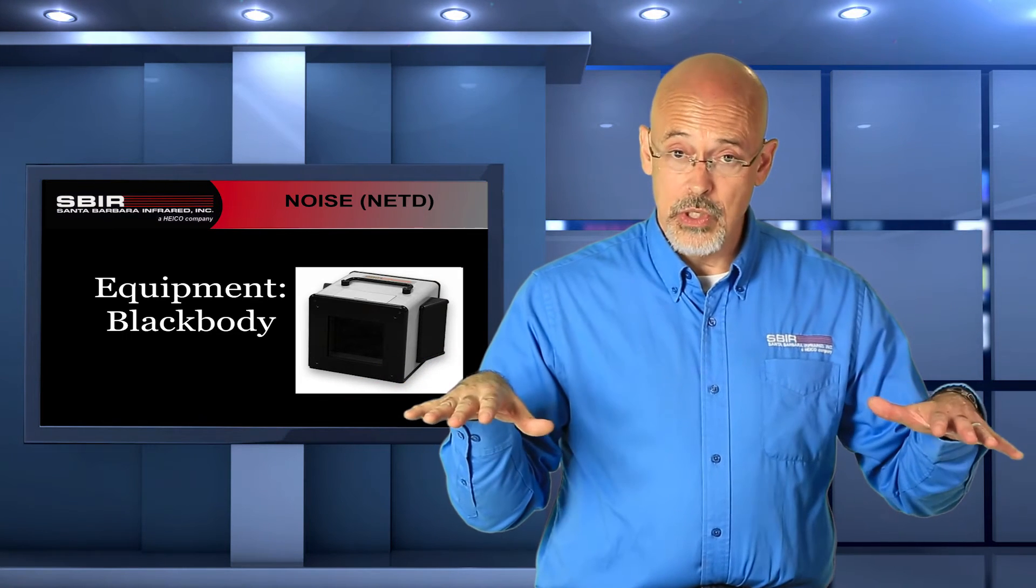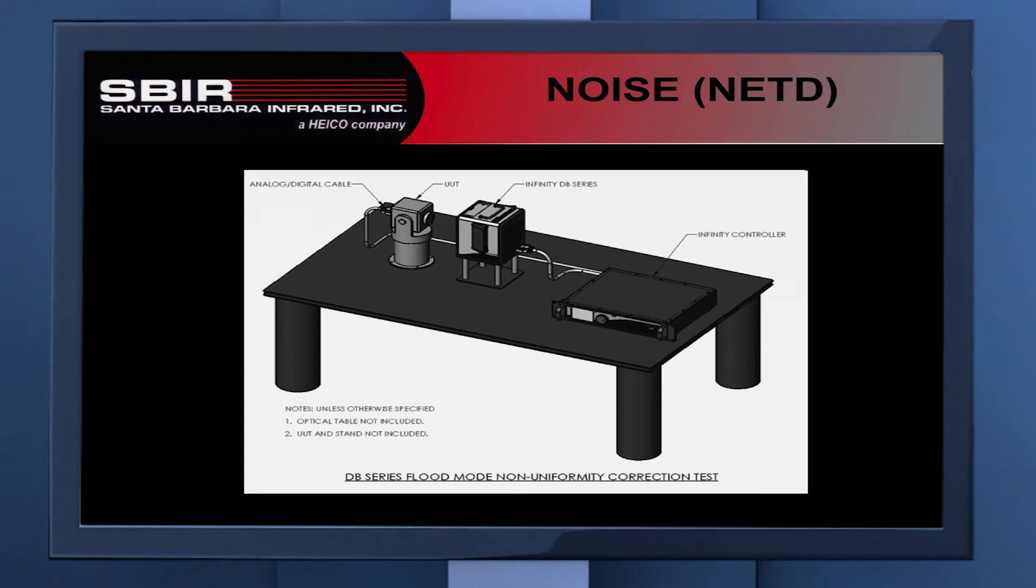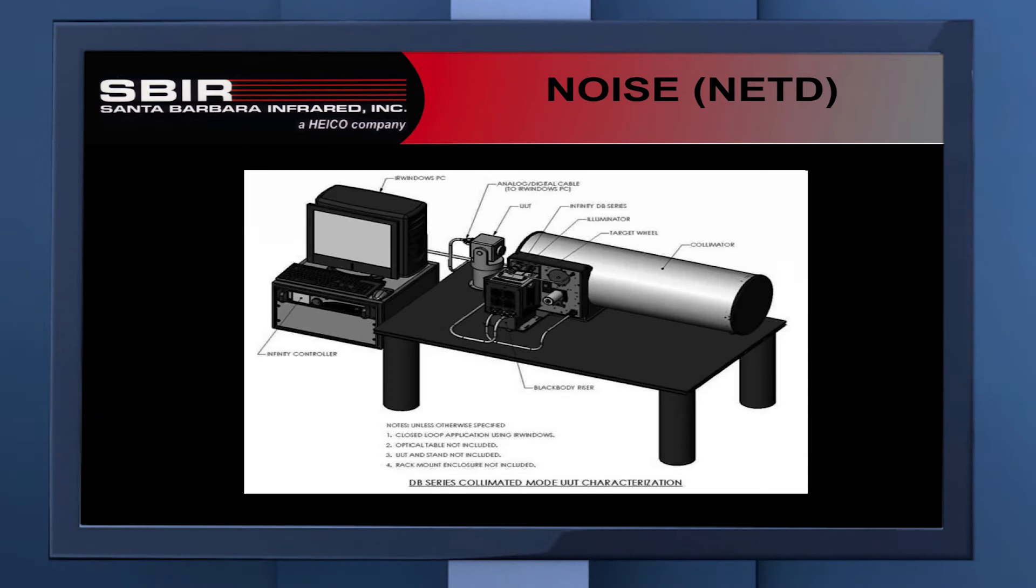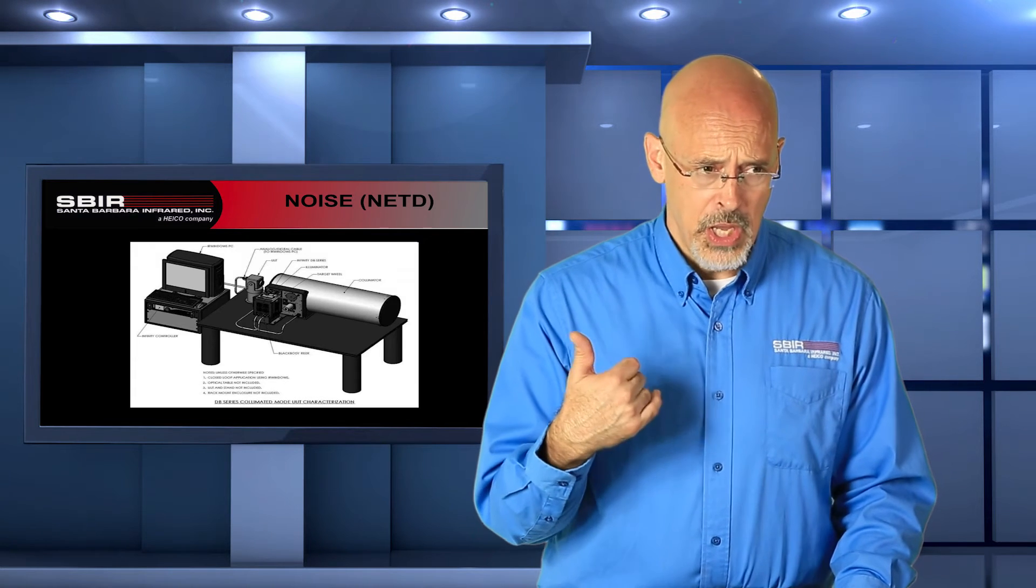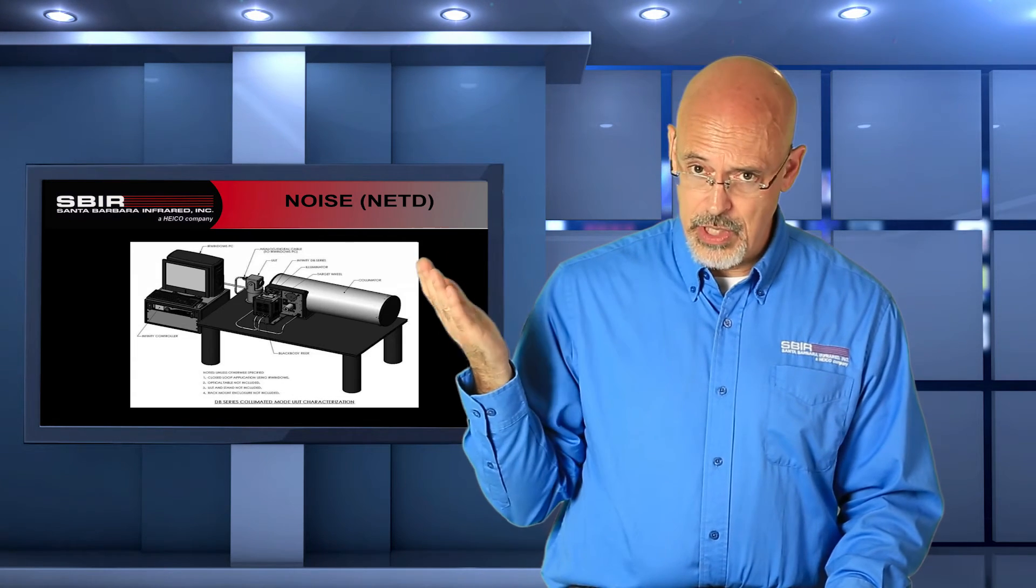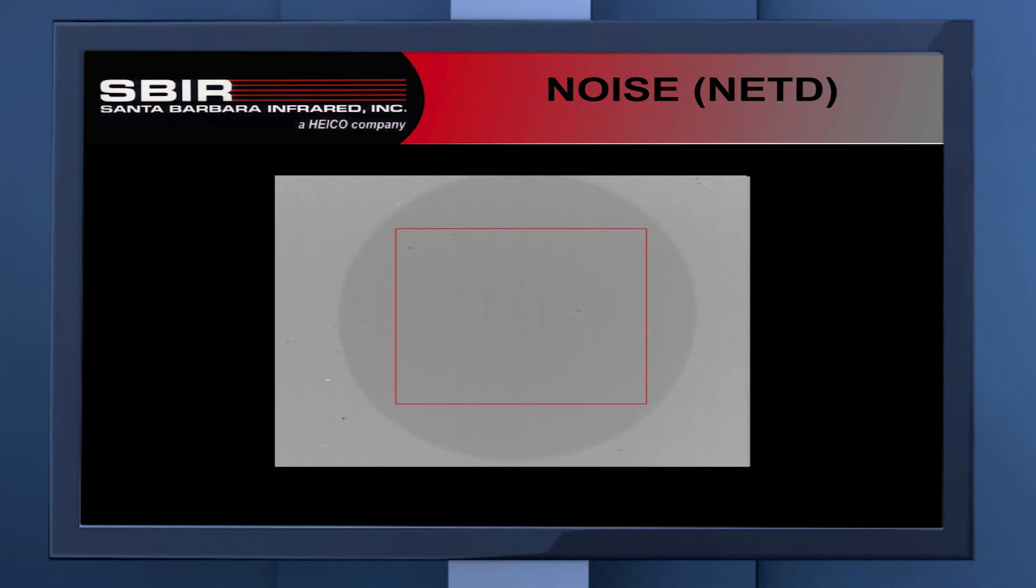Our format is going to be similar to what we do with SITF. We can either have a flood format, where we put a blackbody right up against the camera, and we stimulate the camera overall. Or we can use a target projection system, as in the second layout. That involves more equipment, but it's used for lots of different types of testing. What we generally do for a noise measurement is present a constant temperature. You can see the circular aperture we're looking down through a target projection system. We have a uniform source of temperature. This is a typical setup, especially in IR Windows, for doing these sorts of tests.